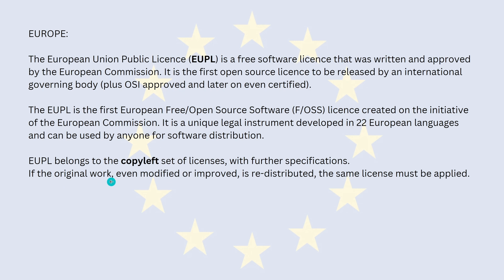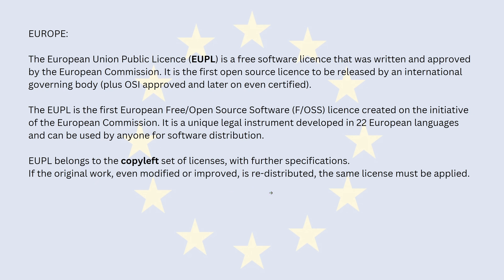If the original work that, for example, my code builds upon — and even if I modify the code or even improve it significantly — if I redistribute this code package, the same license must be applied as the original work. So I cannot suddenly change the license type if I use EUPL. The same license as the original work must be applied. And if it was open, everything else that builds upon and is modified and improved is open.